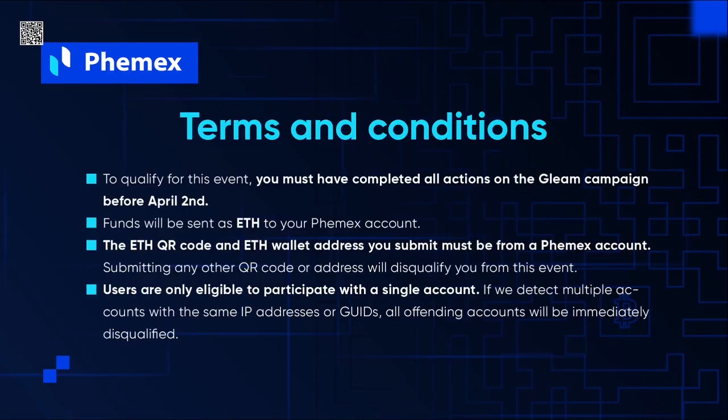To make sure everything's totally clear, let's go over the terms and conditions. To qualify, you must complete all actions on the Gleam campaign before April 2nd. Funds will be sent as ETH to your Femex account. The ETH QR code and wallet address you submit must be from a Femex account — submitting any other QR code or address will disqualify you. Users are only eligible with a single account; if multiple accounts with the same IP address or GUIDs are detected, all offending accounts will be immediately disqualified.